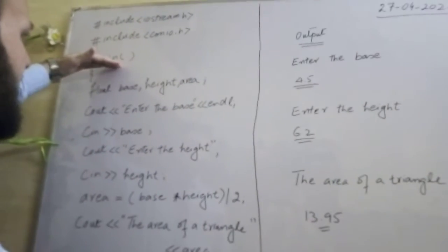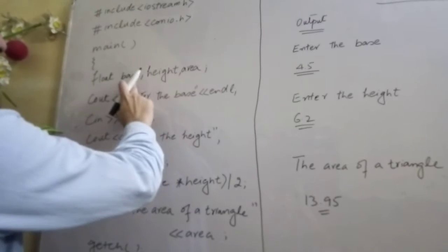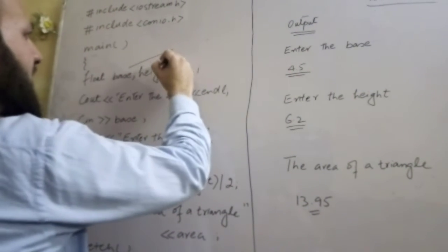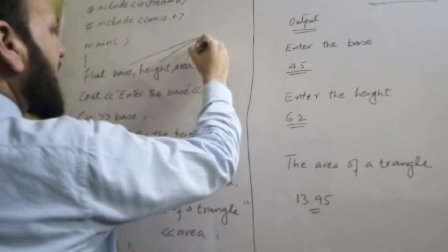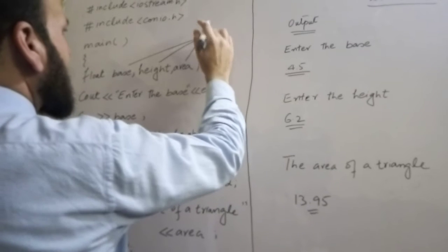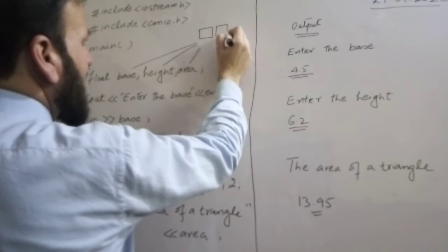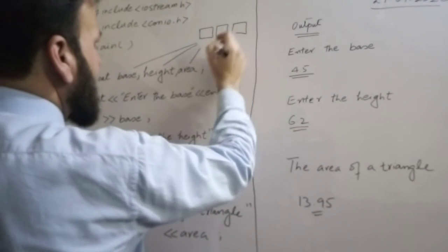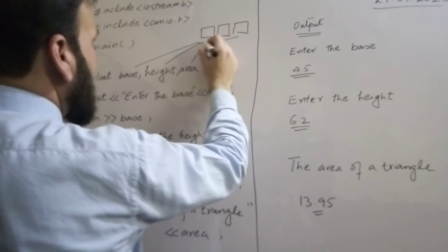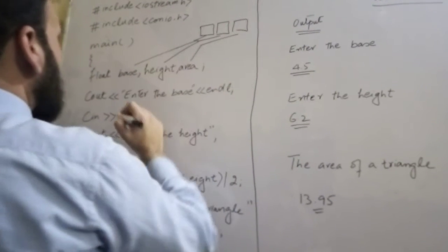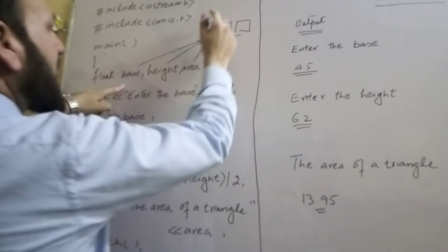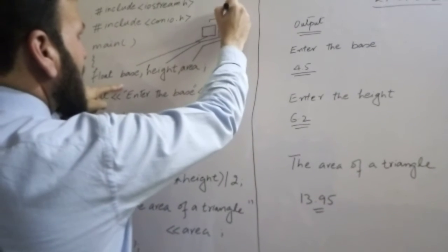The program main starts. Base, height, area - these three are variables. There are three variables: base, height, and area. The data type is float.